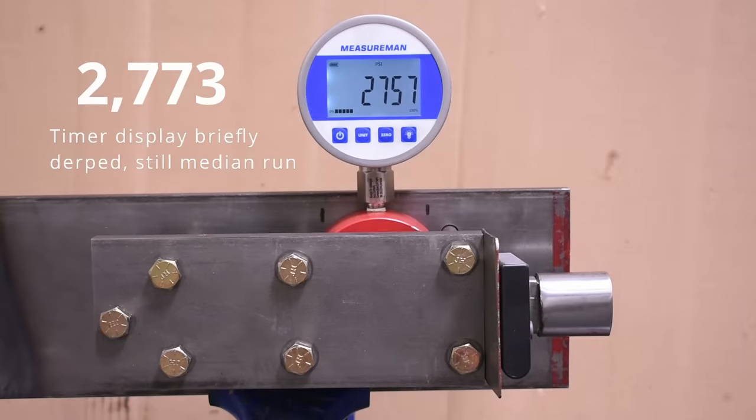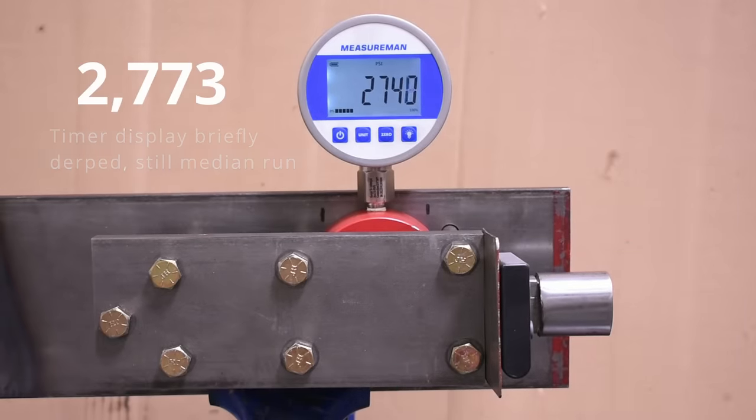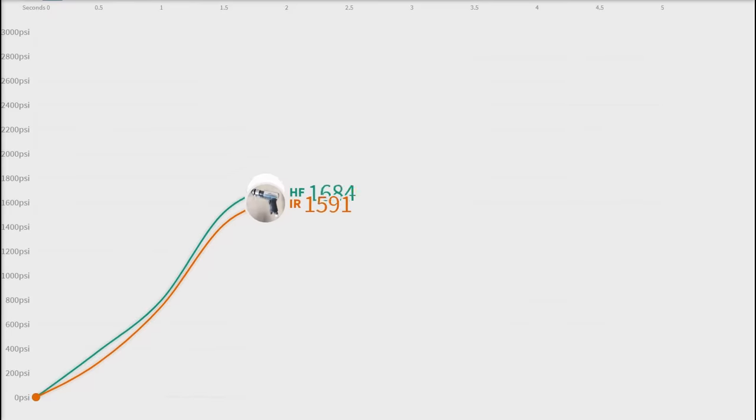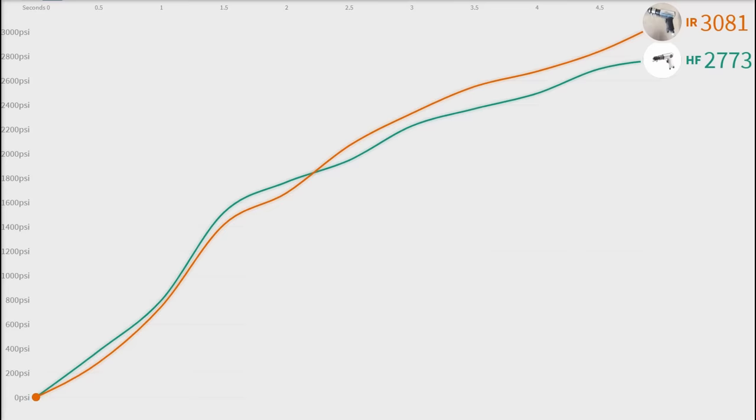The Harbor Freight picks up nicely with that new line pressure, ultimately finishing again 10% behind the Ingersoll Rand. But it is an indication that it's not being hurt or dying from those extra power beans like some tools we've tested from the store.